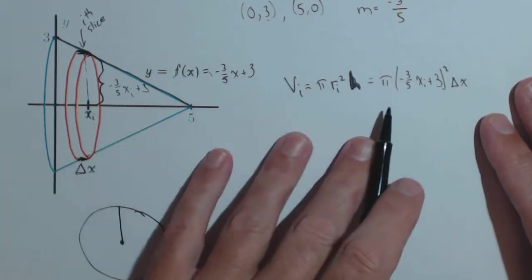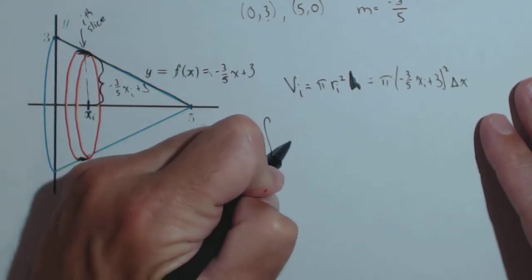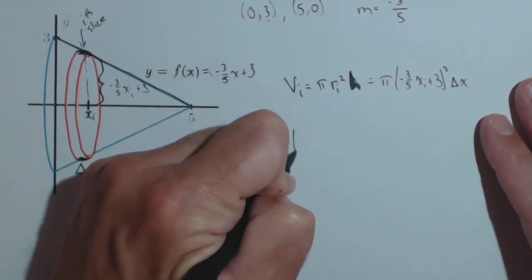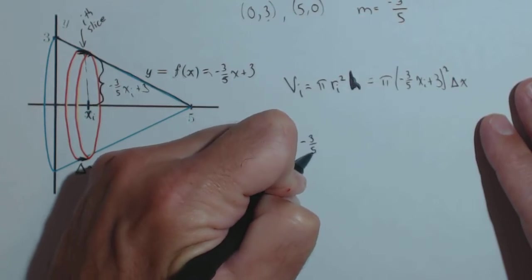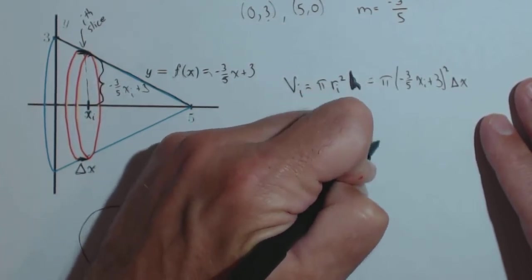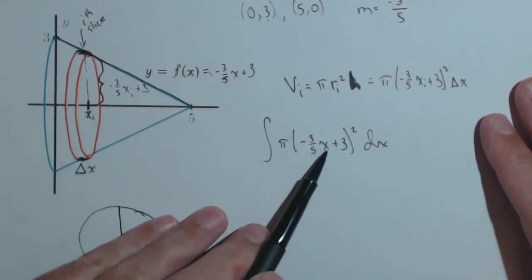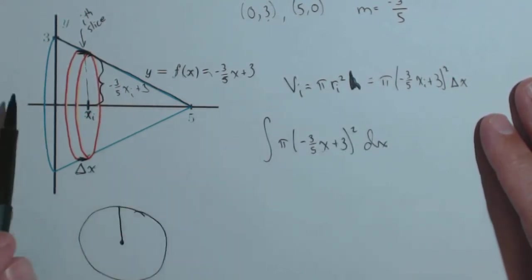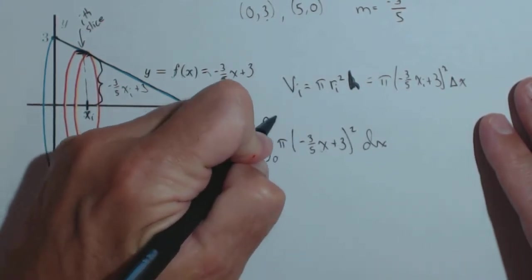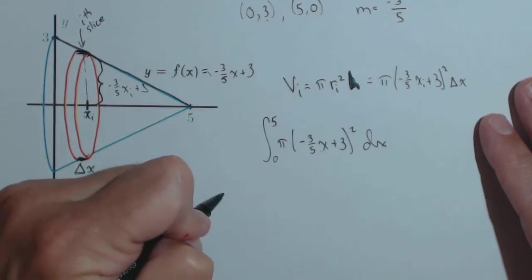Now, remember, we know the value of this now, because if we know the volume of the i-th slice, we can use a definite integral to calculate the volume of the whole thing. So, -3/5x + 3, that whole thing squared, dx. The limits, well, we're integrating over x. x can be as small as zero and as large as five. And there's our definite integral we need to calculate.